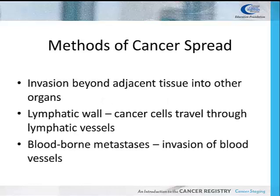To understand cancer staging, we first need to review the disease process of cancer. Cancer originates in a single cell somewhere in the body. That cell divides and grows into the organ of origin, called the primary site, causing a localized tumor.